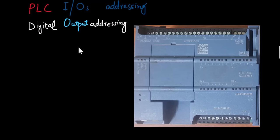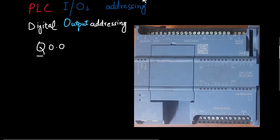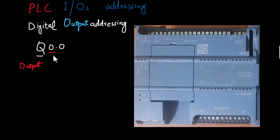The digital output addressing is pretty much the same as input addressing, except the symbol is changed to Q. The first digital output channel will be addressed as Q0.0 in the logic. The letter Q is the symbol for output. The number towards the left of the decimal point is the byte address, while the number towards the right of the decimal point is the bit number.